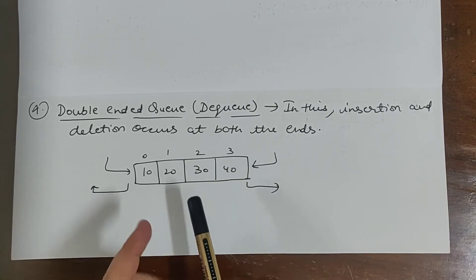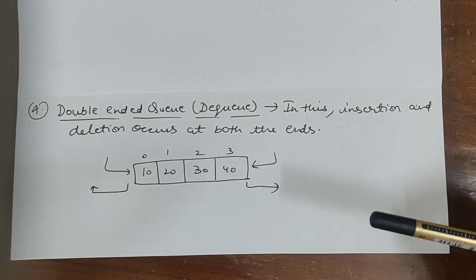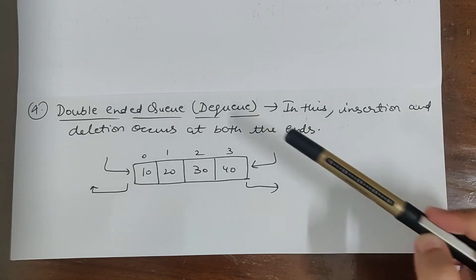Any end we can delete and insert, but we can't delete from the middle. We can insert and delete from both the ends. This is double ended queue and it is also known as dequeue.